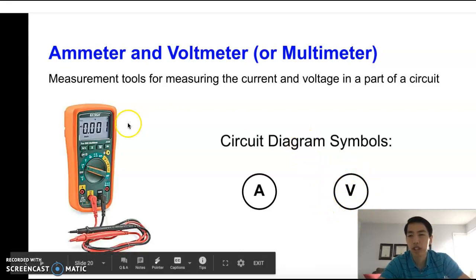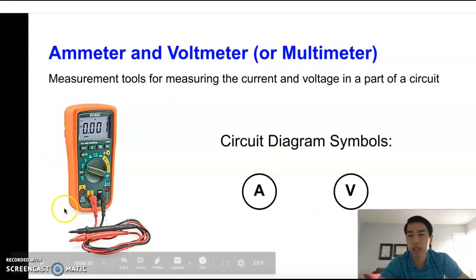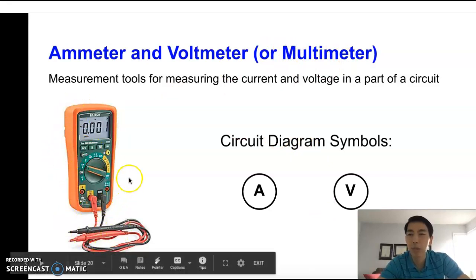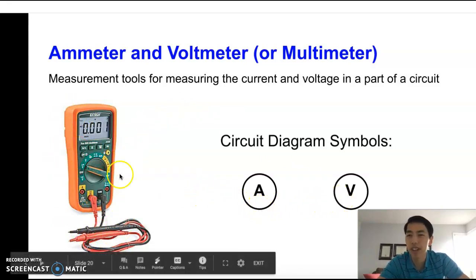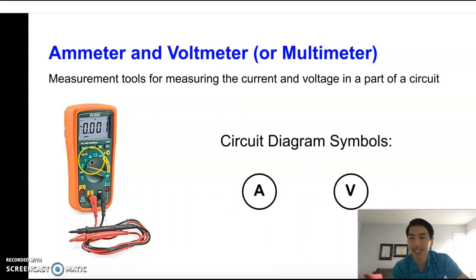And oftentimes electricians will have multimeters, which one of them looks like this. A multimeter can do both jobs of an ammeter and a voltmeter. There's this dial here with all these options and settings, so you can set it to measure whatever you want it to measure in the circuit.